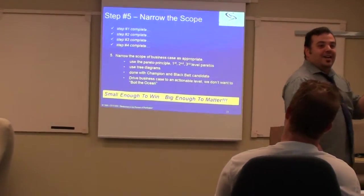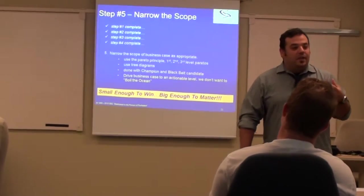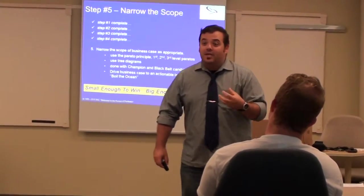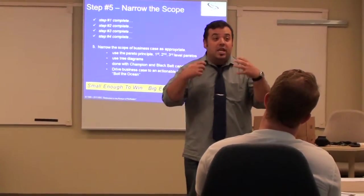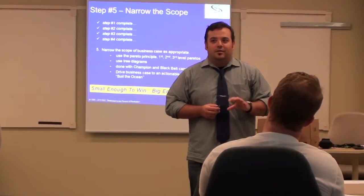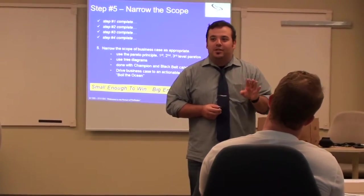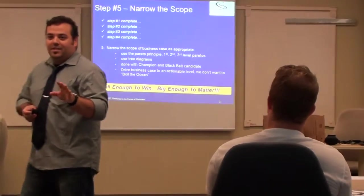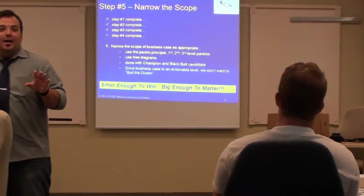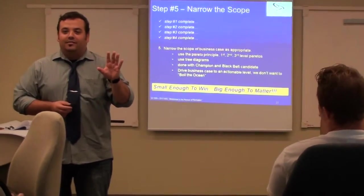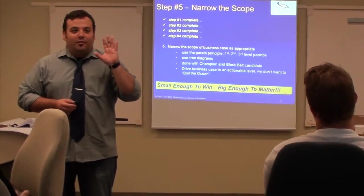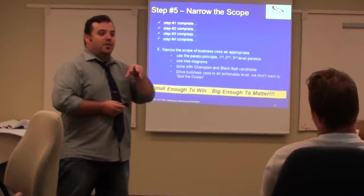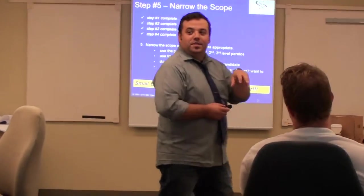And he wrote this paper, and his friends were like, this is great stuff, you need to publish this, this is amazing, you need to get these ideas out there. He said no, please never mention that I did this, please never talk about this. I want no credit for uncovering the fact that 80% of the wealth goes to 20%. So what do you think his friends did?